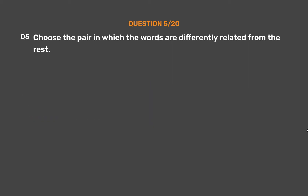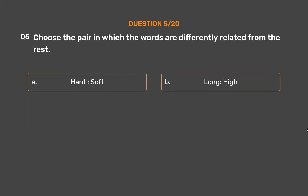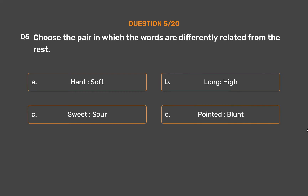Question number 5. Choose the pair in which the words are differently related from the rest. Option A: Hard, Soft. Option B: Long, High. Option C: Sweet, Sour. Option D: Pointed, Blunt.